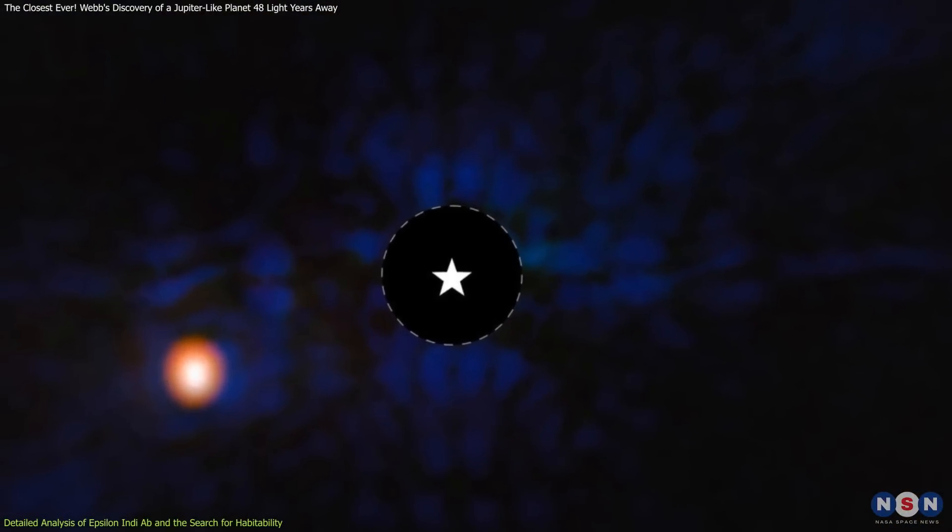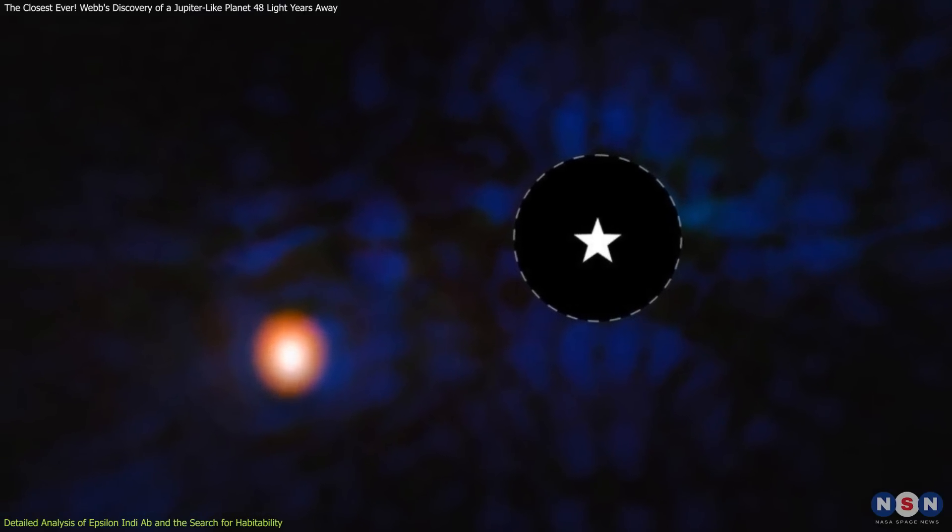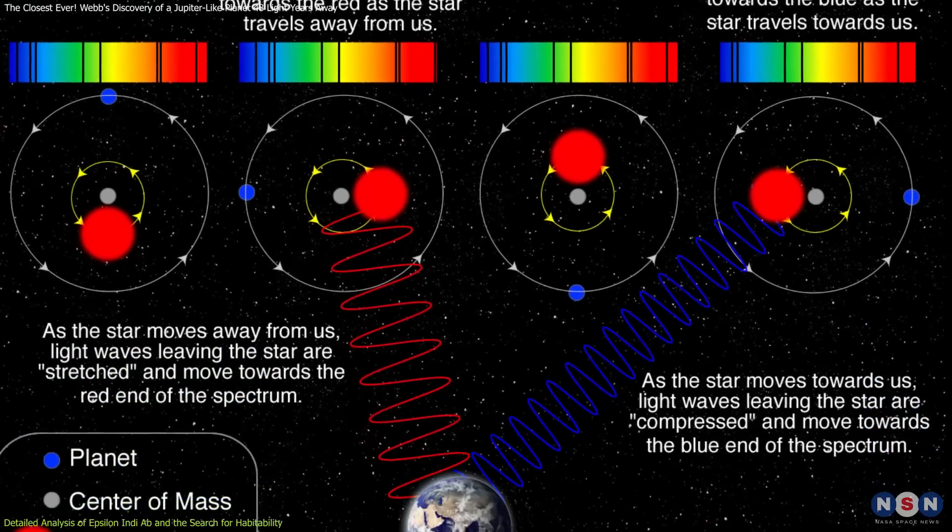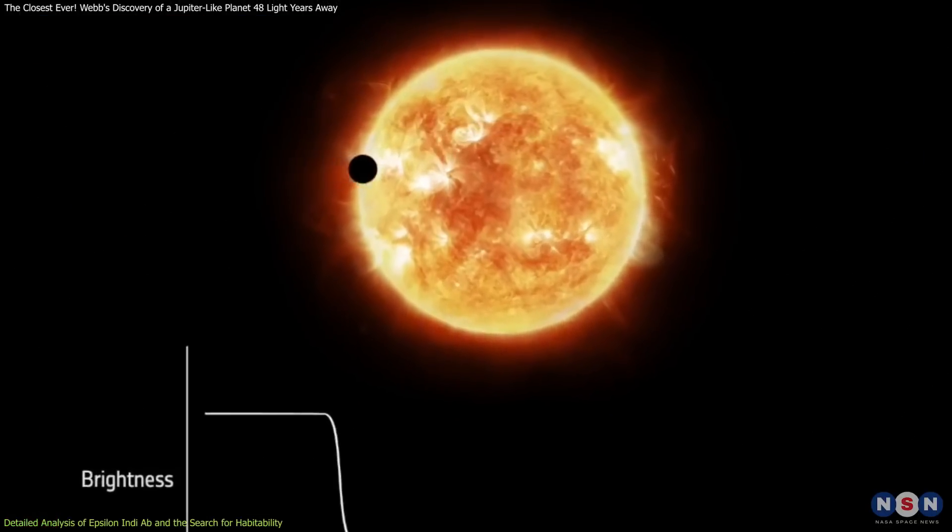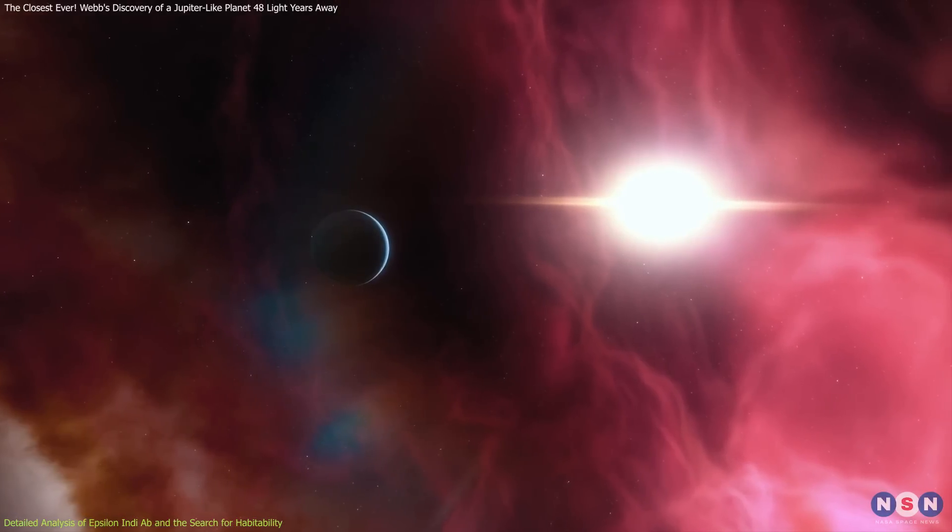These observations from Webb mark a significant advancement over previous exoplanet discoveries, which relied heavily on transit and radial velocity methods. These methods, while effective for closer or larger planets, often miss smaller or more distant planets.